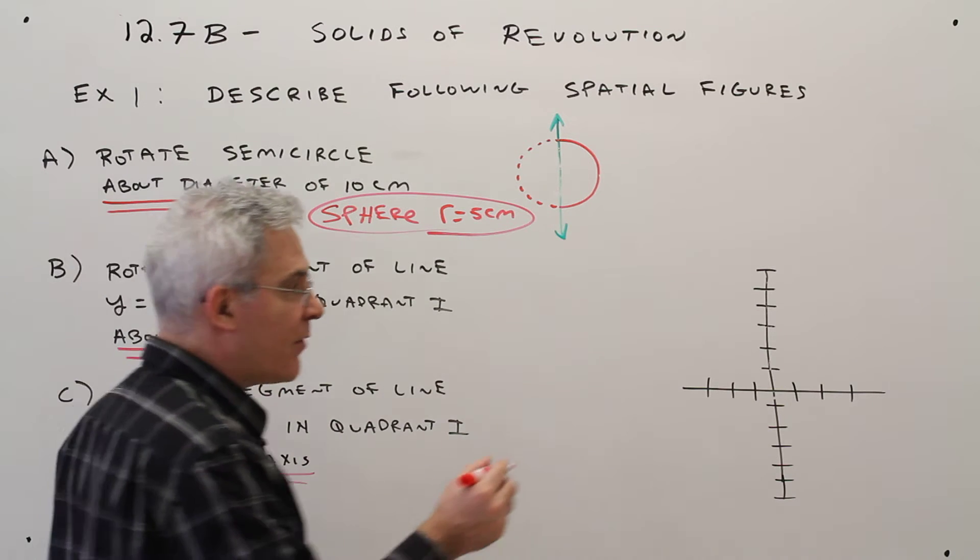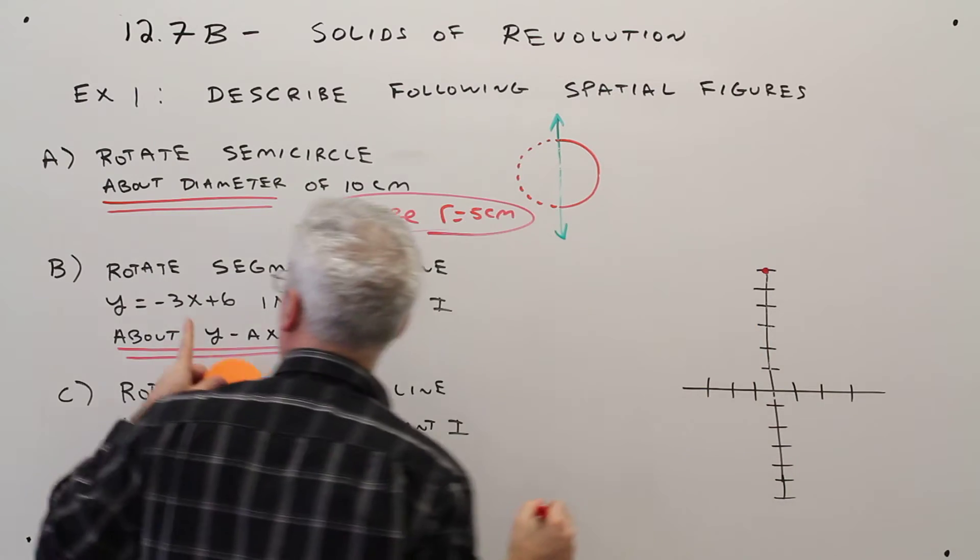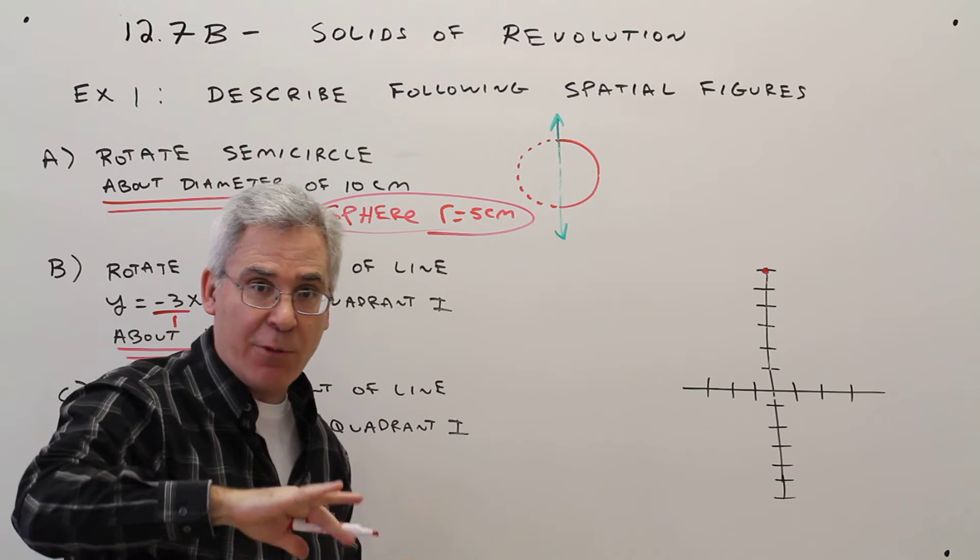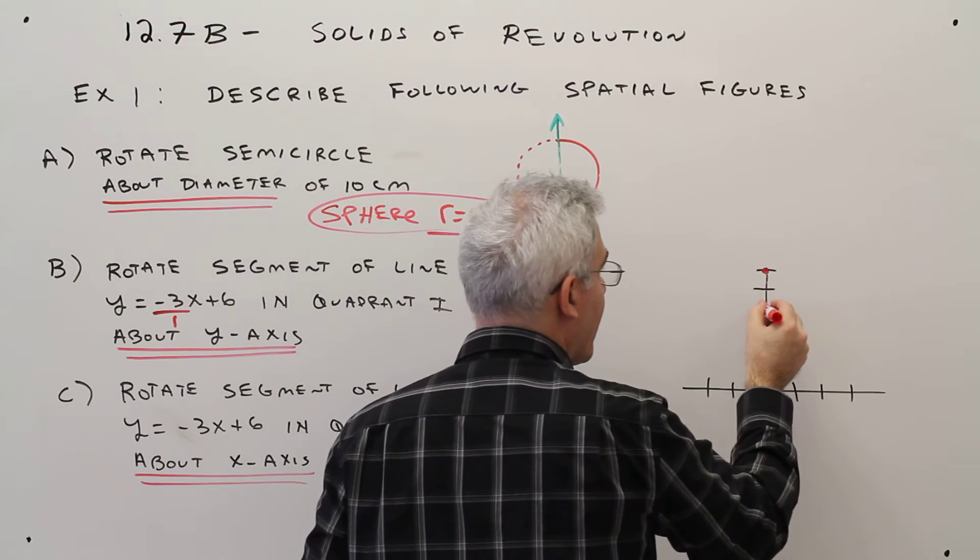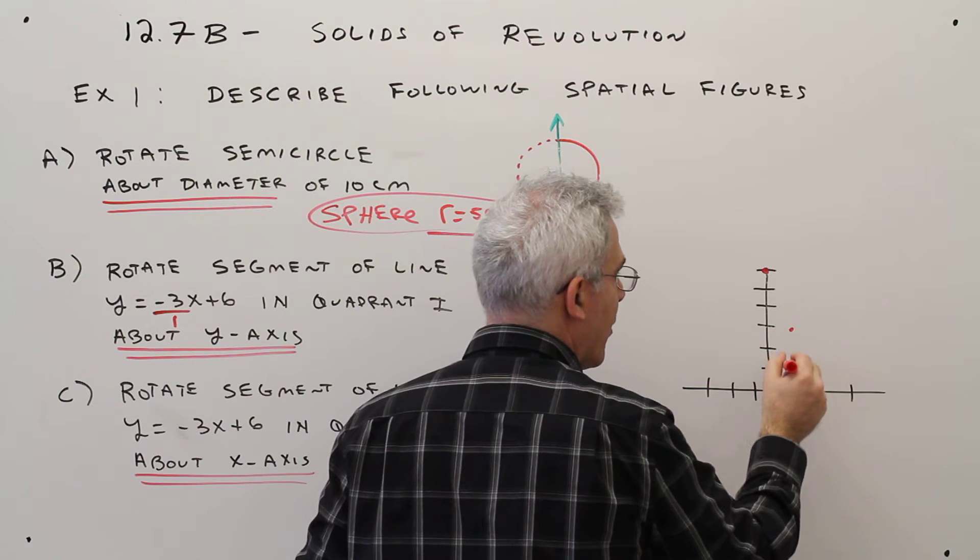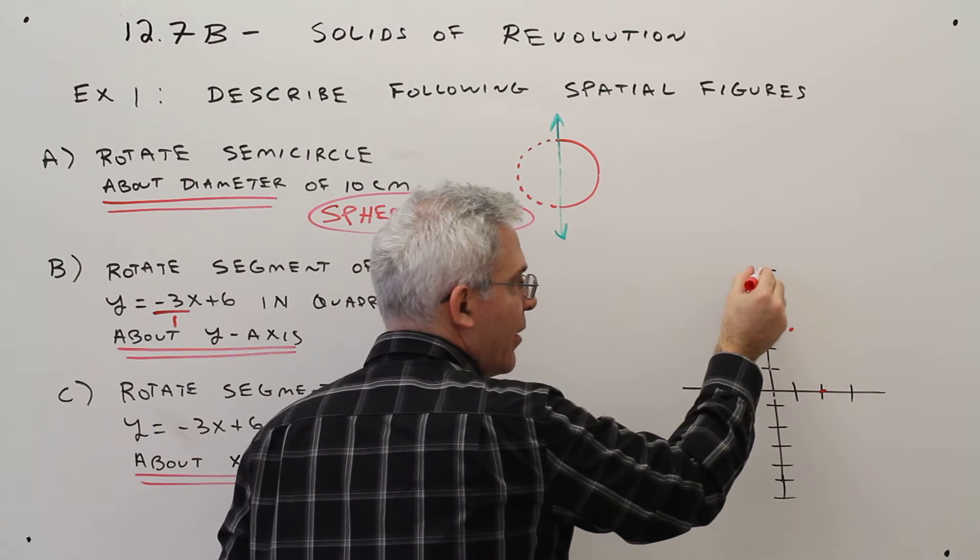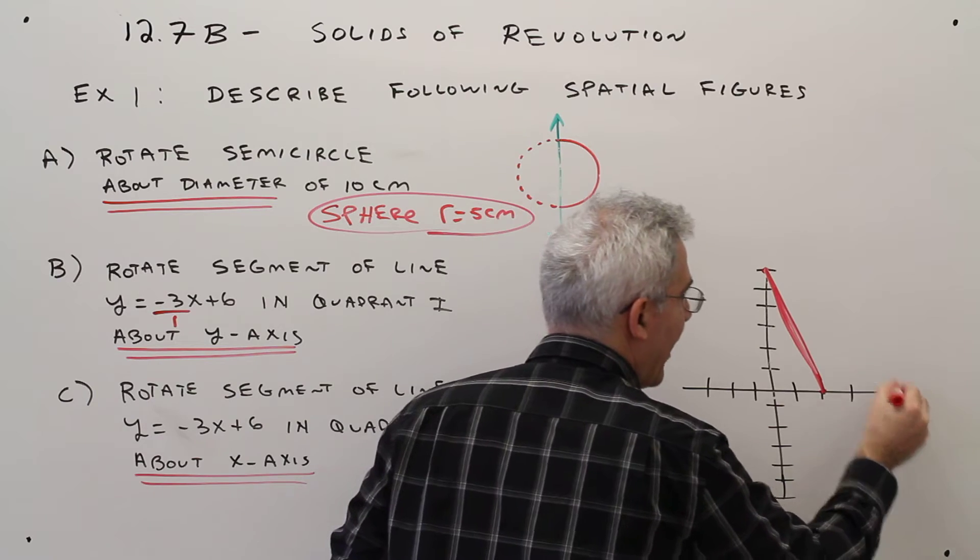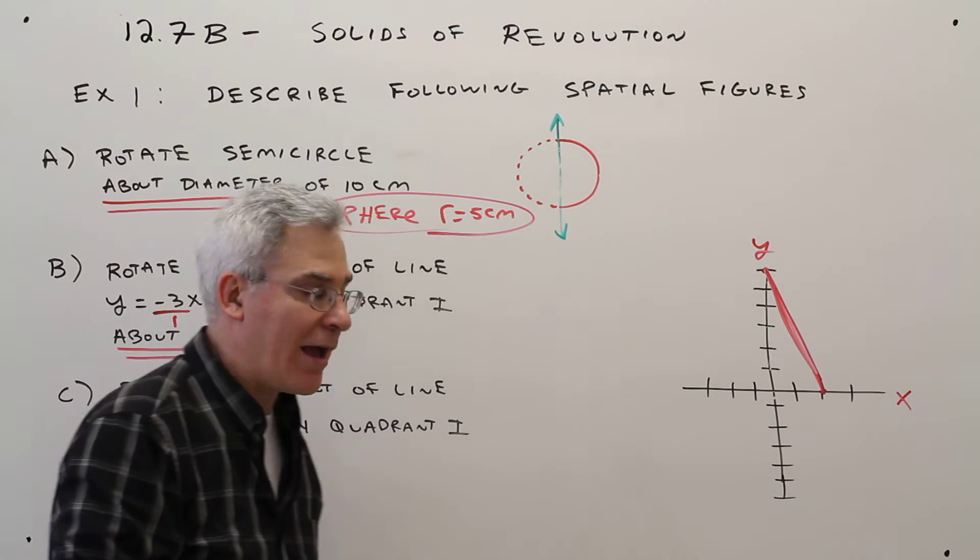So the Y-intercept is 6. And the slope is minus 3 over 1, rise over run. So down 3 units over 1. 1, 2, 3 over 1. 1, 2, 3 over 1. So it's going to be that segment right there. This is the X-axis. This is the Y-axis.